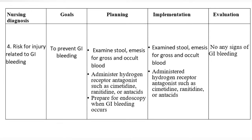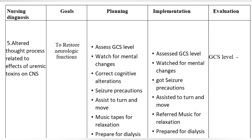Nursing Diagnosis 4: Risk for injury related to GI bleeding. Goal: To prevent GI bleeding. Planning and Implementation: Examine stool and emesis for gross and occult blood. Administer hydrogen receptor antagonists such as cimetidine, ranitidine, or antacids. Prepare for endoscopy when GI bleeding occurs. Evaluation: Monitor for any signs of GI bleeding.